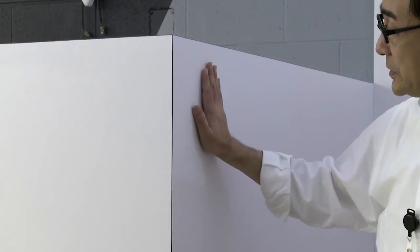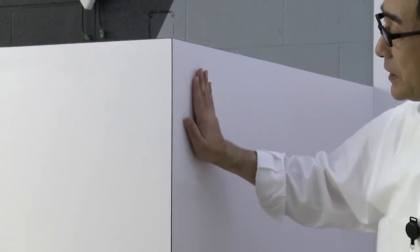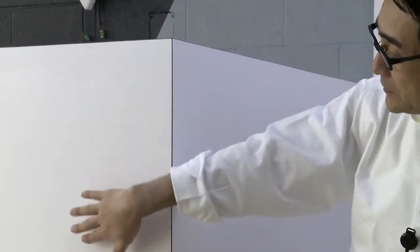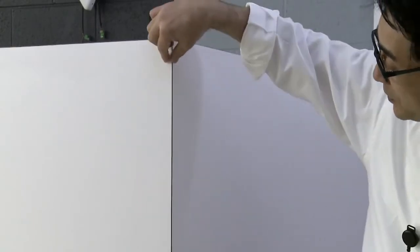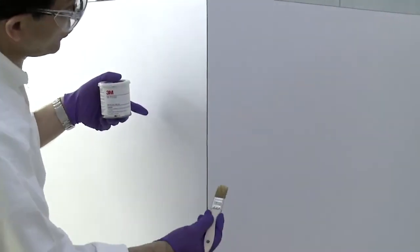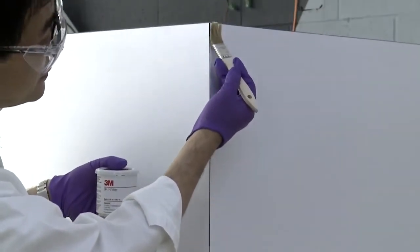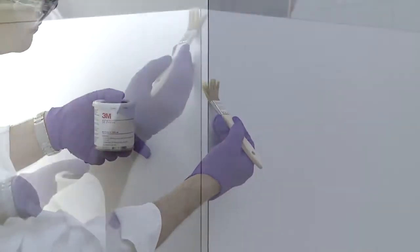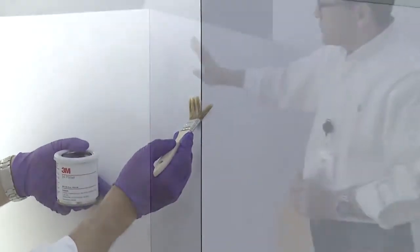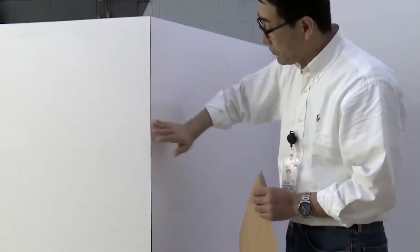In this technique, you will apply the first panel of film and wrap it around the corner. Then you'll apply the second panel of film and trim it at the corner. Apply the adhesion promoter to both sides of the outside corner, along the entire length of the area to be covered with film. Allow it to dry for 5 to 15 minutes.